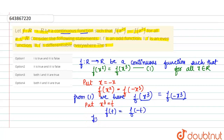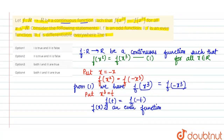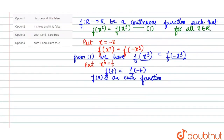तो हम कह सकते हैं कि जो हमारा f(x) है, वो एक even function है। अब हम case 2 में आते हैं — क्योंकि तीन cases हैं: f is an odd function, f is an even function, और f is differentiable everywhere.